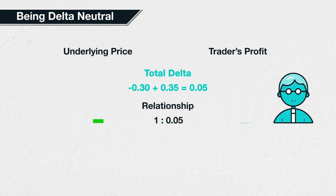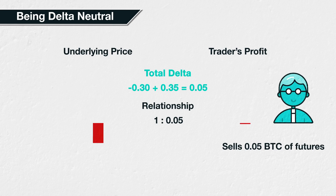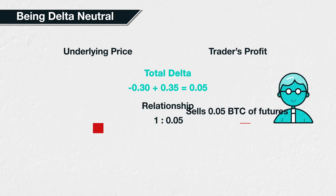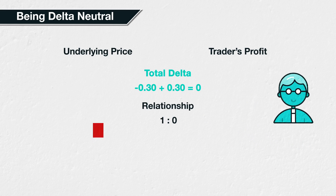To get back to delta neutral, they need to sell some Bitcoin futures contracts with a size of 0.05 Bitcoin. If they do so, they will reduce their futures delta from 0.35 to 0.3. This restores their position to a delta neutral state, as desired.